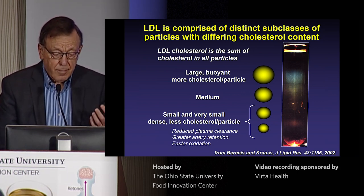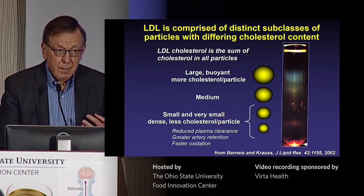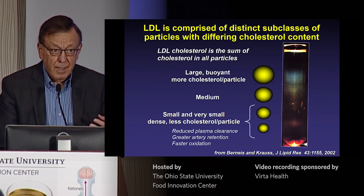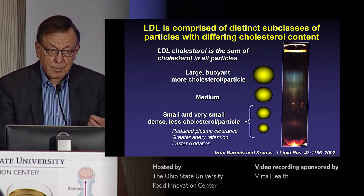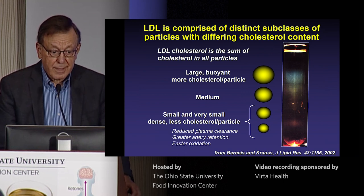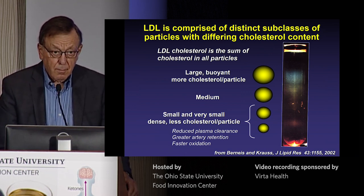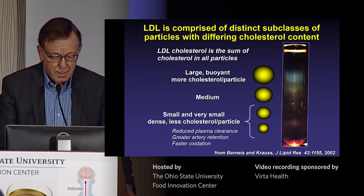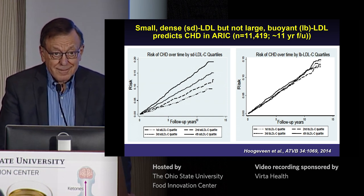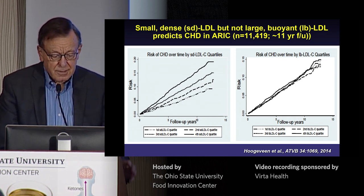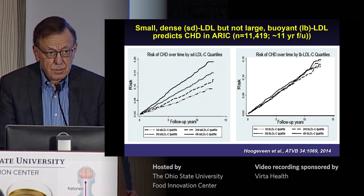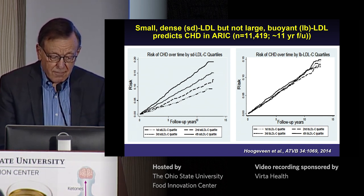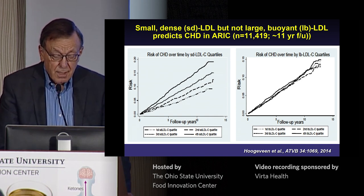The small dense LDL particles have properties that render them more likely candidates for causing vascular disease. They have lower plasma clearance from the bloodstream — LDL are taken up through receptors mainly in the liver, and these particles are cleared more slowly, spending more time in the blood. When they hit the arteries, they're retained more tightly than larger particles. They're also oxidized more rapidly, making them even more toxic as they become inflammatory.